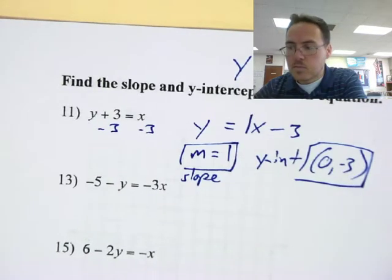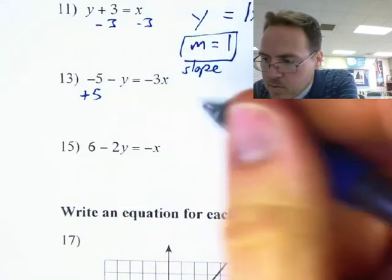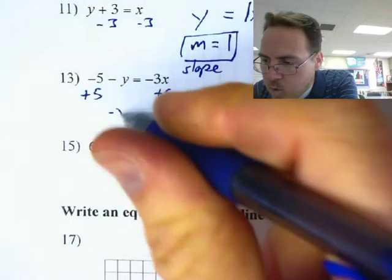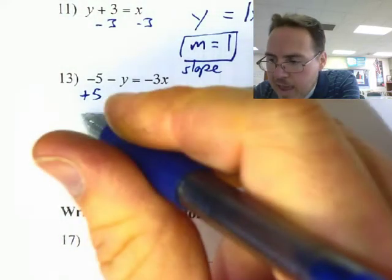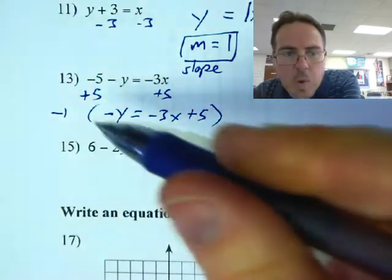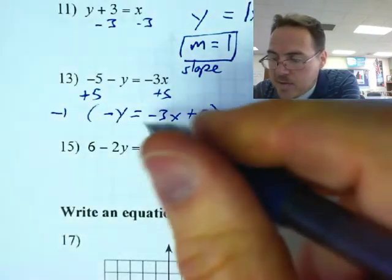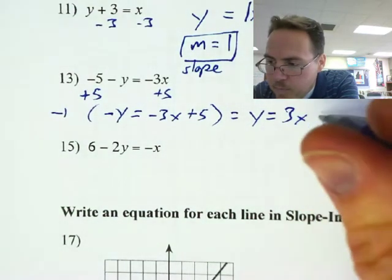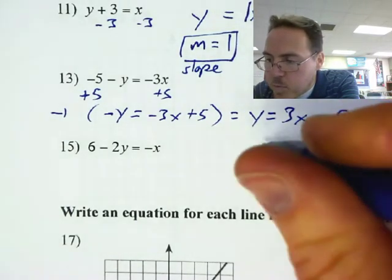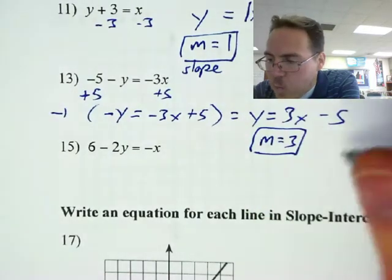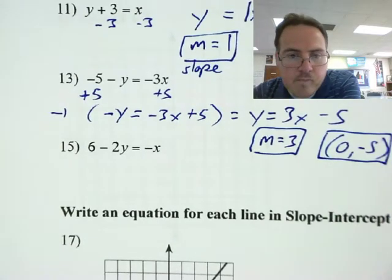Number 13. First I add 5 to both sides to get negative y equals negative 3x plus 5. Then I multiply everything by negative 1 to make y positive, and I get y equals 3x minus 5. So the slope is 3 and the y-intercept is at (0, negative 5) — it crosses the y-axis at (0, negative 5).